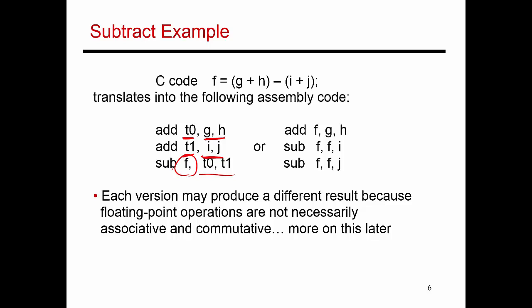Another option is to add G plus H, put it into F, then subtract I from F, then subtract J from F. So again, both of these pieces of code seem equivalent because they're doing the same thing. They are both using three instructions, so they should kind of perform similarly. This piece of code may be viewed as more efficient because it does not use temporary locations T0 and T1. So in that sense, it uses fewer registers.